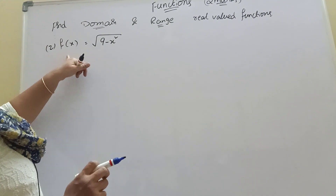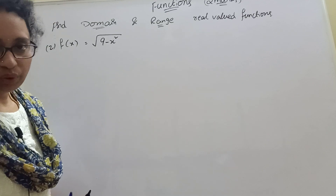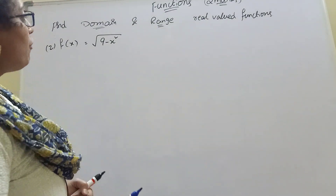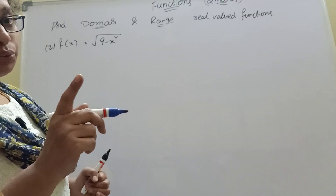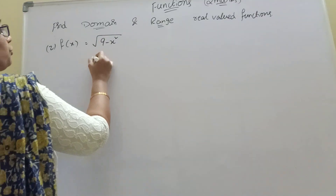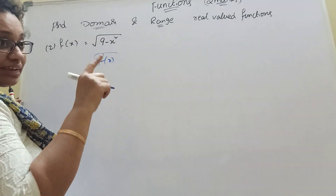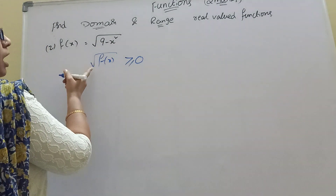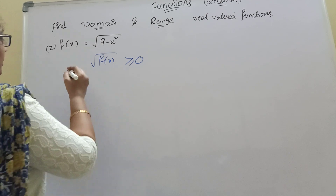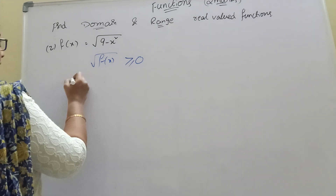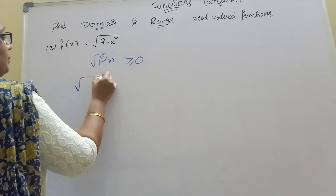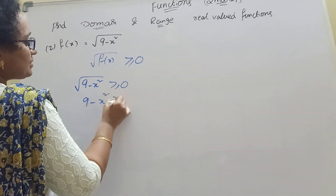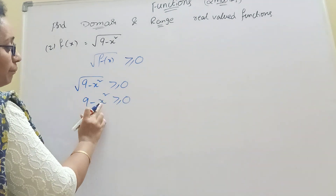Next problem: f of x equal to root of 9 minus x square. Find domain and range. Okay? The first thing is: if root of f of x is greater than or equal to 0, this is the condition. It is the root of positive value. The condition is the root of 9 minus x square is greater than or equal to 0 — 9 minus x square is greater than or equal to 0.